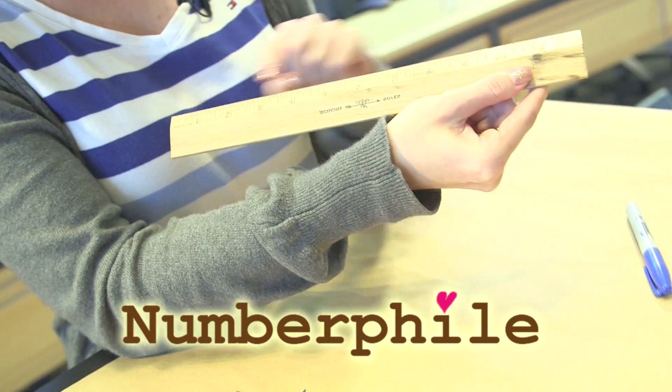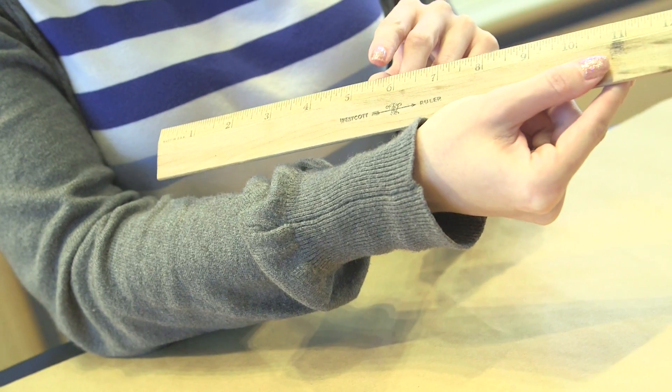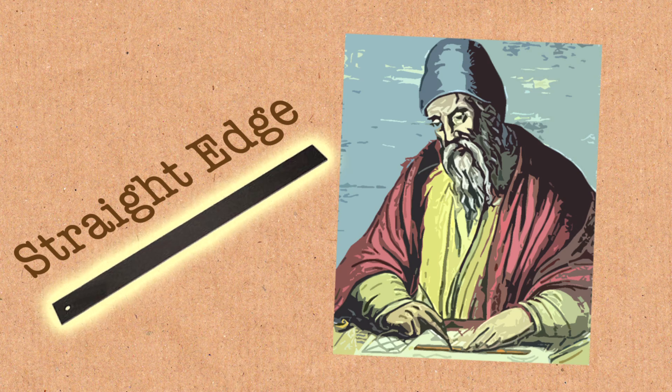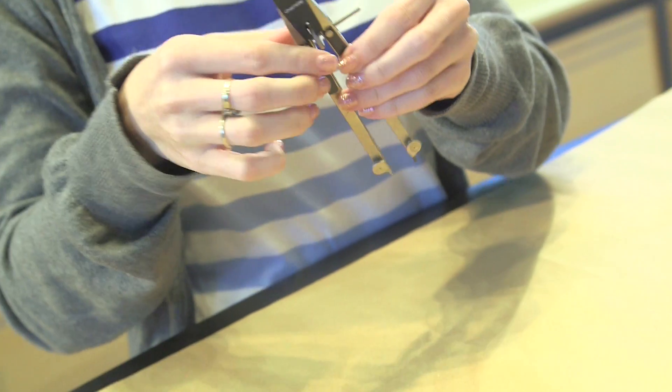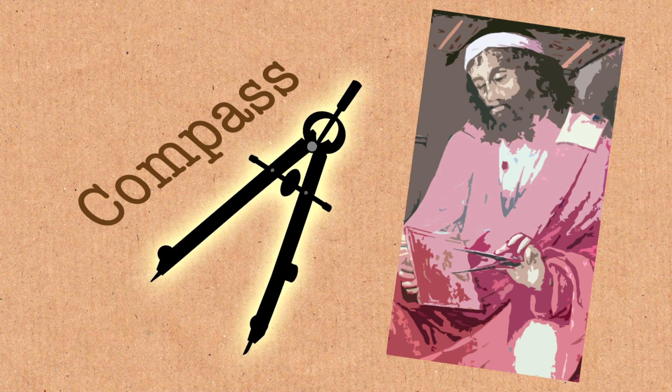This is a straightedge, except this is marked. Euclid's straightedge is just a straightedge, it's not a ruler. And this is a compass, and you can use it to draw circles.